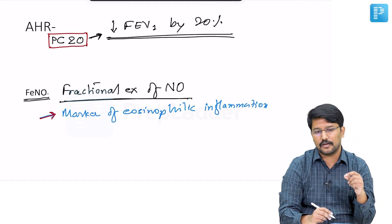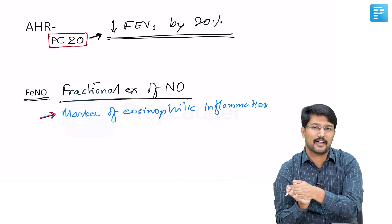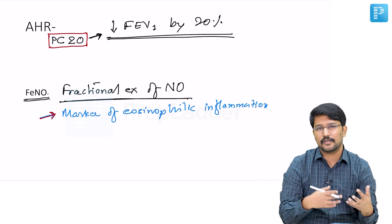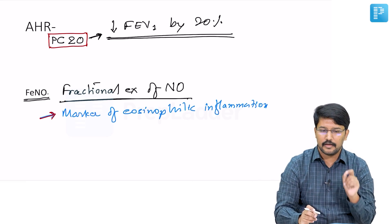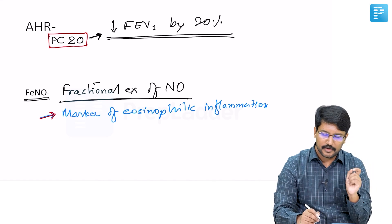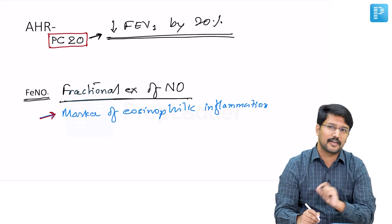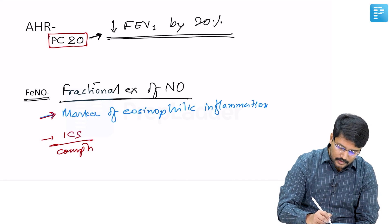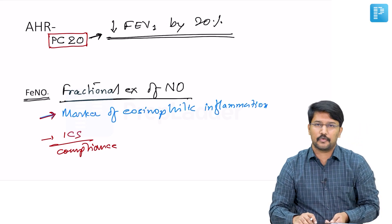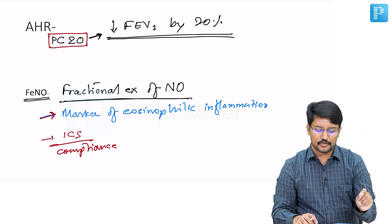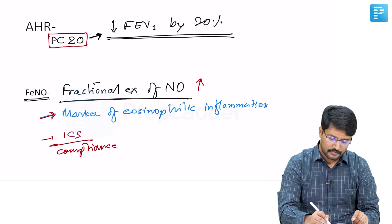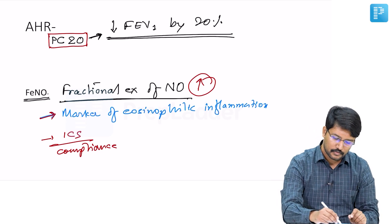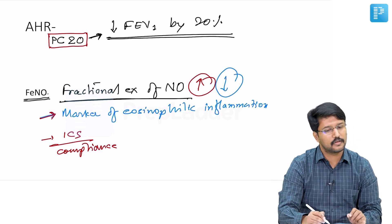The more the fractional exhalation of nitric oxide, the stronger is the eosinophilic inflammation. On the other hand, lesser it is, lesser is the active eosinophilic inflammation that is going on. Currently it is used in research-based studies, but it finds a use in assessing the compliance of patients to inhaled corticosteroids. If they are not taking the inhaled corticosteroids adequately, then there is baseline inflammation going on and the FeNO would be high. If the compliance is good, then FeNO is probably going to be low.